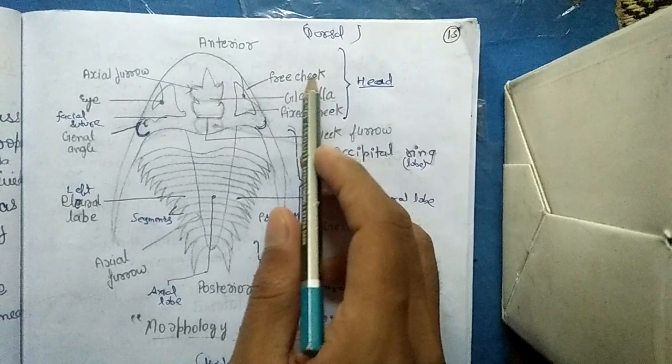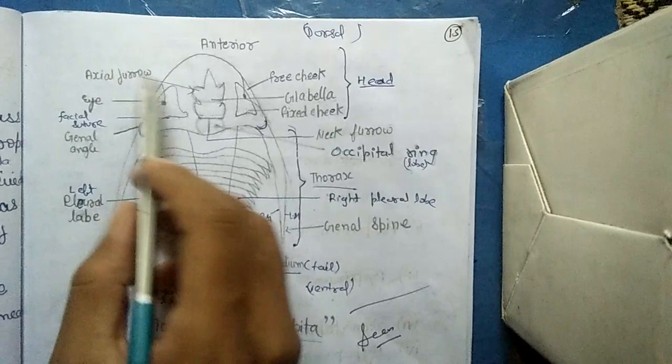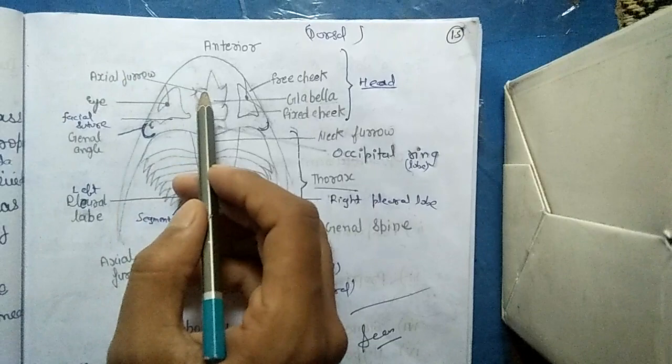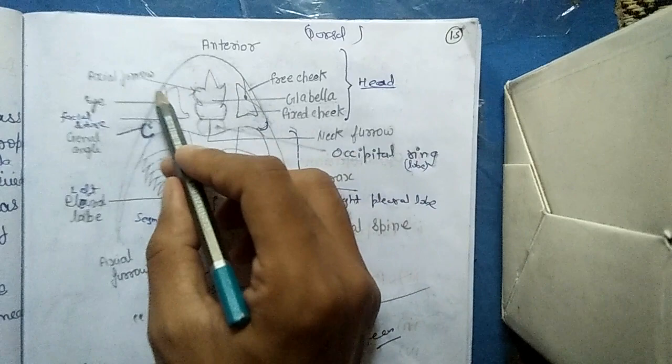This is the axial furrow, the lines. This whole portion is glabella. These are the cheeks, free cheeks, and these are the fixed cheeks.